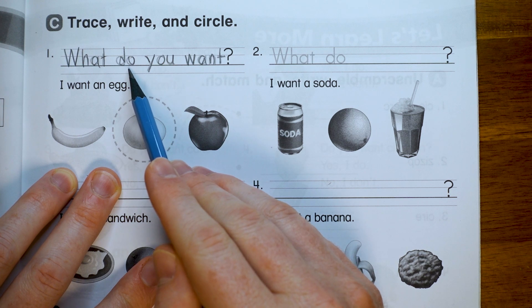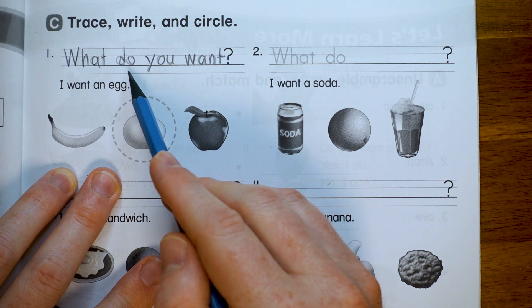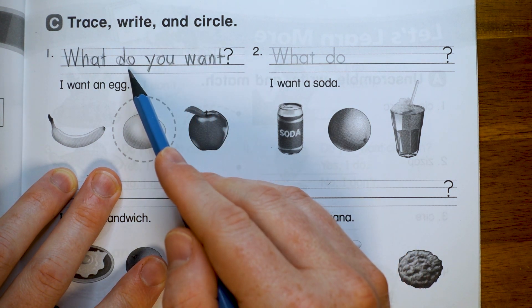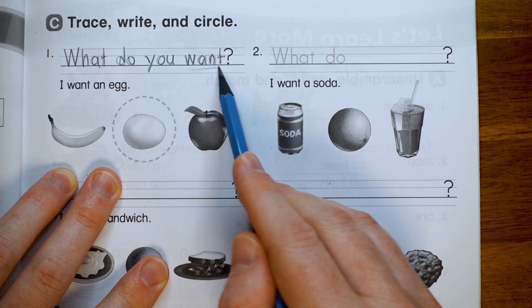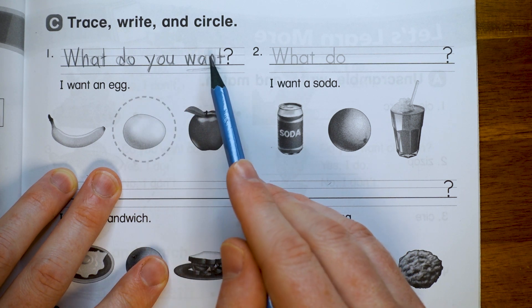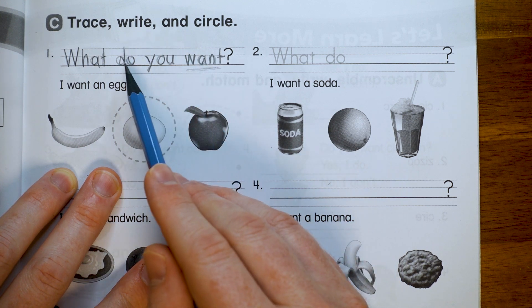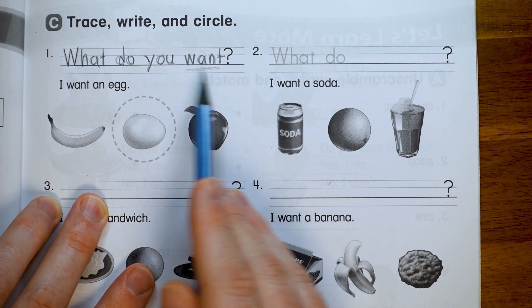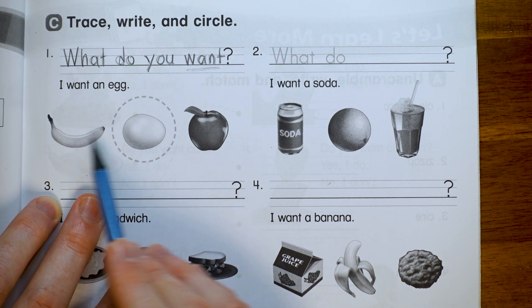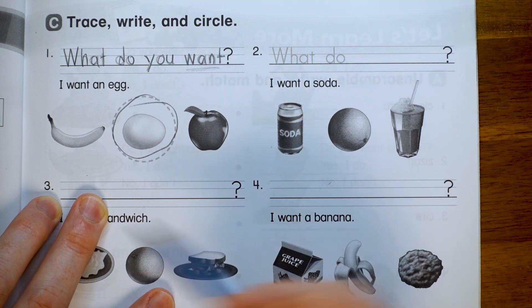All right, we'll trace that. What do you want? Okay, and we're using 'do' this time and not 'is' because we don't want to know about a thing. We want to know about this action here. So when we ask about actions, we can't say 'is.' We need to use 'do.' And the answer is, I want an egg. There's the egg. Give it a circle.